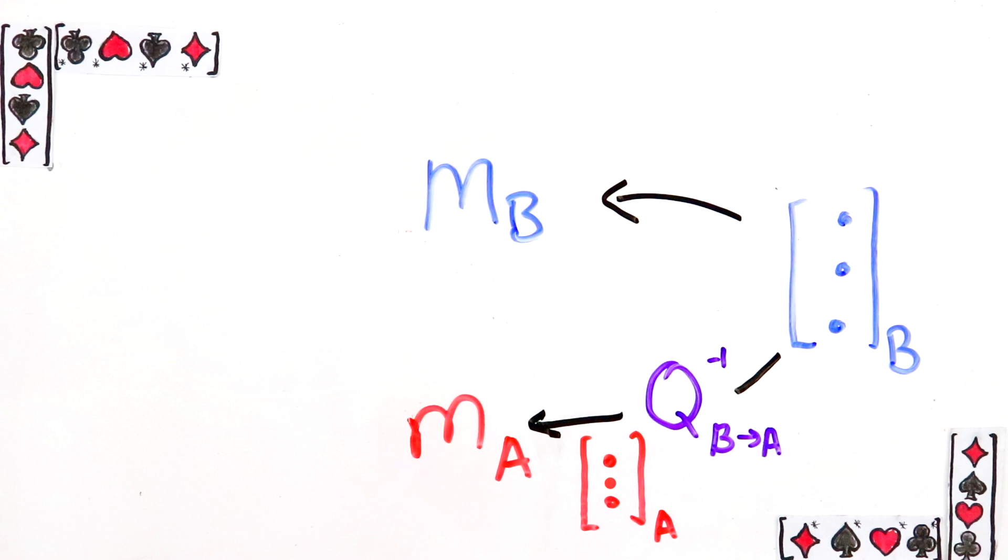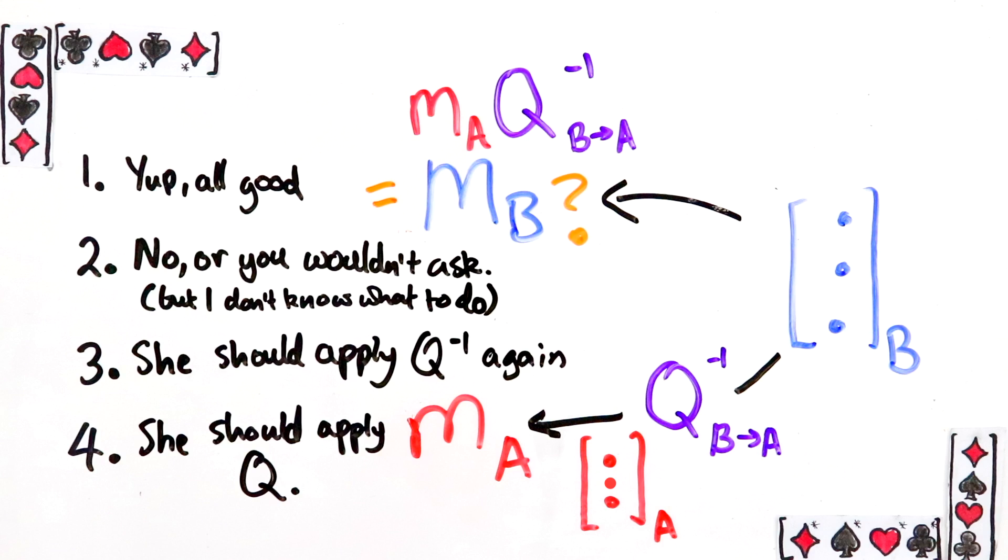Pause the video to think about whether this matrix, MA Q inverse, is the linear transformation we want in Bob's basis. Then choose one of these options in the poll. 1 is yes, 2 is no but I don't know what to do next, 3 is she should apply Q inverse again, and 4 is she should apply Q. Pause the video now and try and work it out.